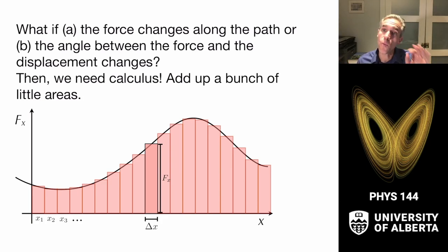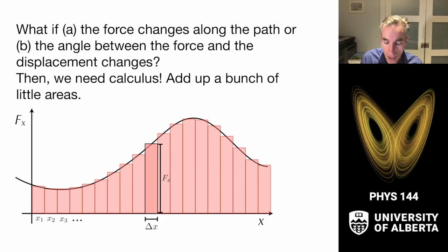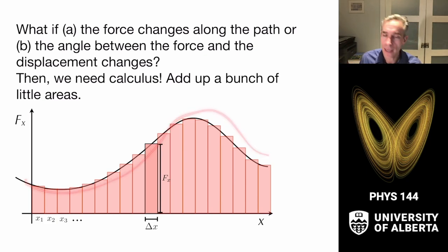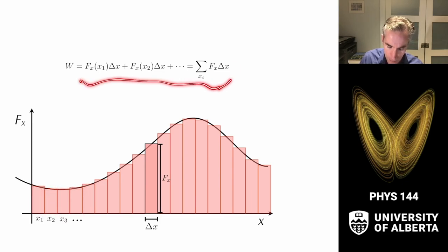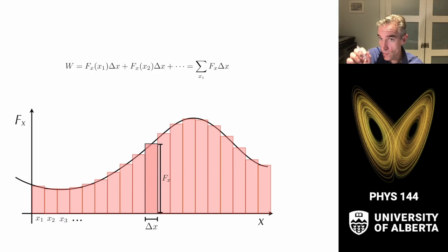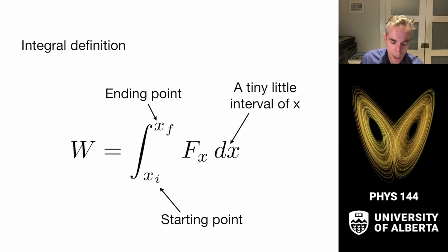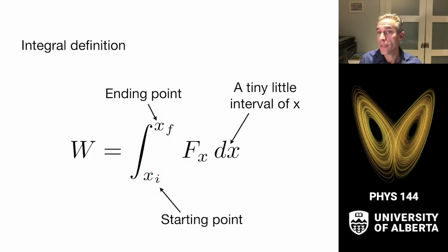If the force acts in the negative direction relative to the displacement, it represents a negative area under the curve — negative work. This gives us the mechanics to ask what happens with a varying force: we add up all those little areas to calculate total work. As we make those intervals tiny, we encounter the core definition of an integral. So we write the work done on the system as the integral from start to end of the force component in the direction of displacement times a tiny displacement dx.